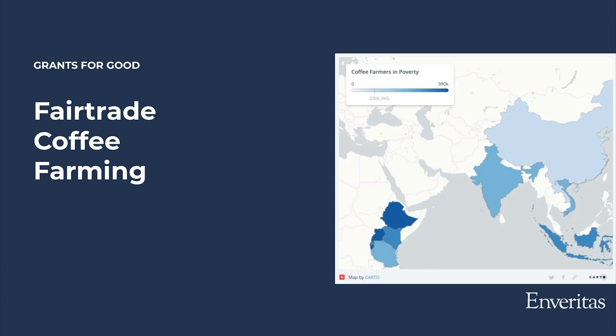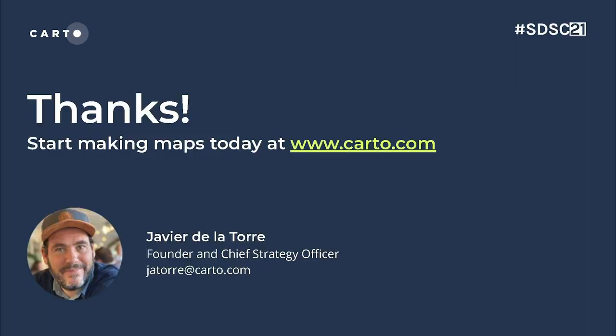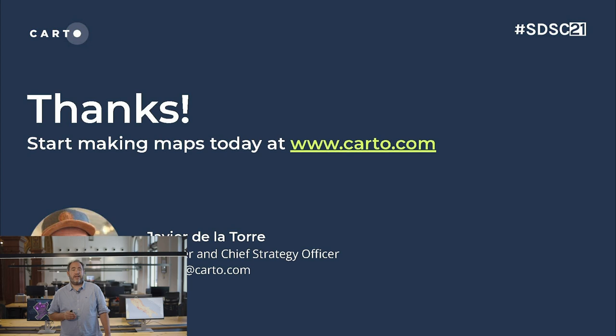Emberitas uses Carto to ensure more sustainable supply chains and help farmers out of poverty — their mission is to help all coffee farmers participate in a global sustainable coffee industry. This month, we are also excited to announce a further partnership with Google Cloud, supporting their Ambition Sustainability Program, enabling global organizations to better understand the impact of climate change. These are inspiring cases of people using spatial analytics to drive change and protect our world. Visit carto.com, start a free account, and let us know what you think. Looking forward to the rest of the conference!